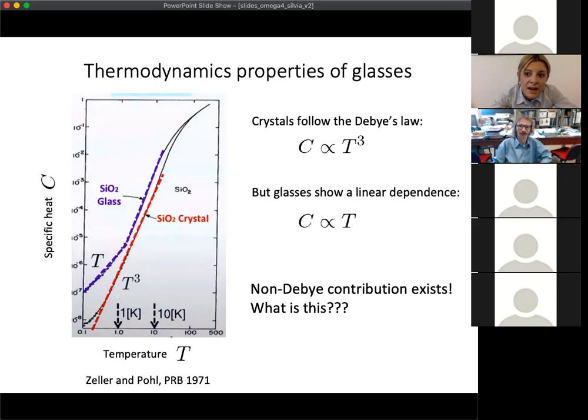We will see that vibrational properties are very important to understand also the other key features of glasses: thermodynamic, dynamical, and mechanical properties. Let's look briefly at the thermodynamic properties. Glass is a kind of solid. For crystalline materials, crystals follow the Debye law, so the specific heat follows a cubic dependence with temperature, T³. But if we perform an experiment with amorphous silica shown here, we see that this cubic dependence is not valid anymore.